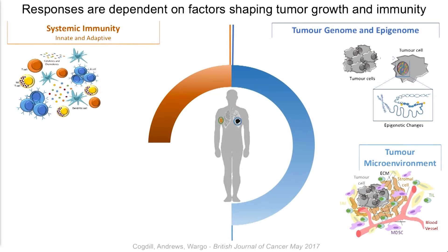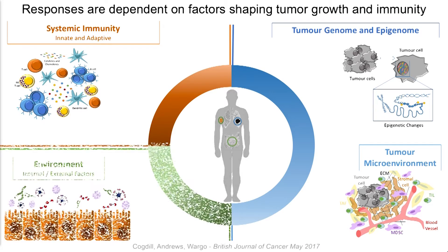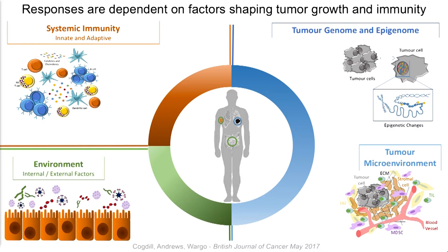With regard to cancer immunotherapy, we know that responses to treatment are actually dependent on a number of different factors that shape both tumor growth and immunity. With the advent of next-gen sequencing, we know that the tumor genome and epigenome are very important. The tumor microenvironment is also critically important, and certainly in the setting of immunotherapy, the immune system and systemic immunity play a major role. But what is becoming very apparent now is that environmental factors play quite a significant role in the response to cancer therapy — namely, the microbiome.